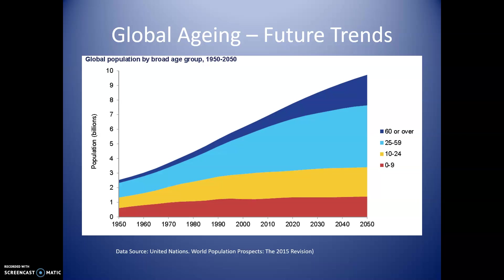Looking at what's going to happen in the future: this graph shows clearly that the percentage of the population aged 60 or over is predicted to rise steadily over the next few years. Although there are signs this will plateau eventually, that is not going to happen anytime soon. By 2050, probably about 25% of the global population will be 60 and over, while the percentage in the younger age group is going to decline over the same time period.